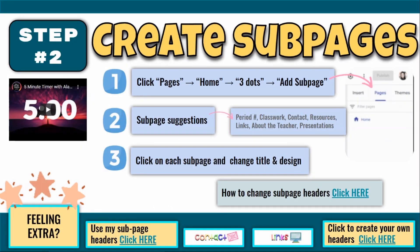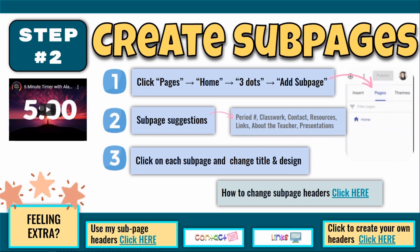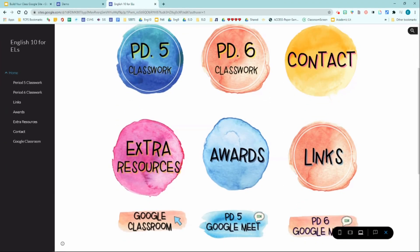Step two is creating the sub pages. Sub pages are sub-sections of your site where you will house different information. Some suggestions for sub page titles are classwork, contact information, resources, links, Google Classroom link, and so on. You will need to brainstorm and create your own list of sub pages that best fits your class. This is an example of my sub pages for my English 10 class.